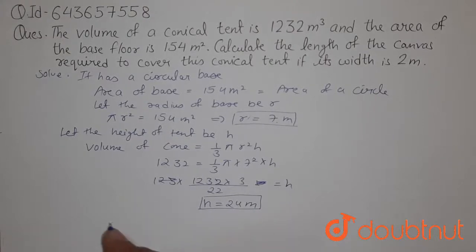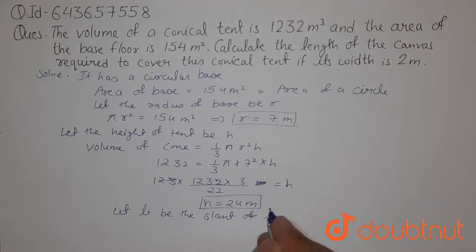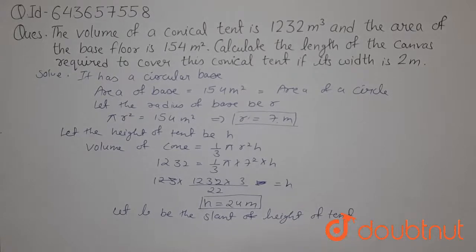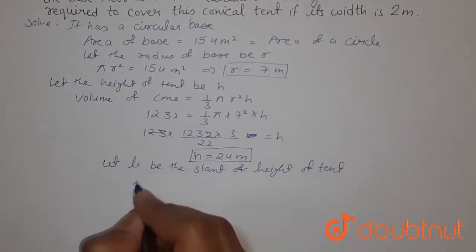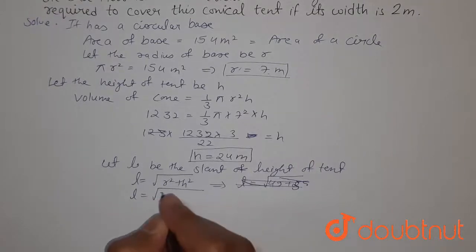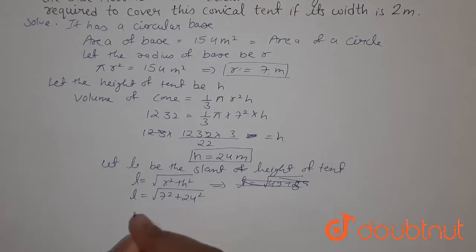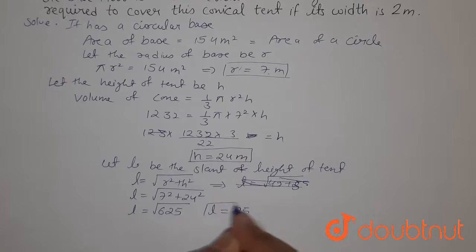Let L be the slant height of tent. We can write L equals √(R² + H²). So L equals √(7² + 24²), which is √625. Value of L will be 25.